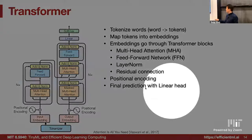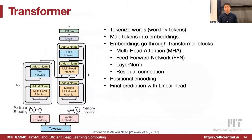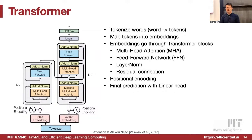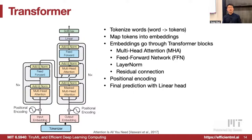Given those constraints, the transformer solves many of these problems. The architecture of a transformer block has several components we'll go through step by step: the tokenizer, token embeddings, the multi-head attention mechanism to model information between tokens, the feed-forward layer to model information independently per dimension, layer normalization, residual connections, positional encoding, and finally a linear head for making final predictions.